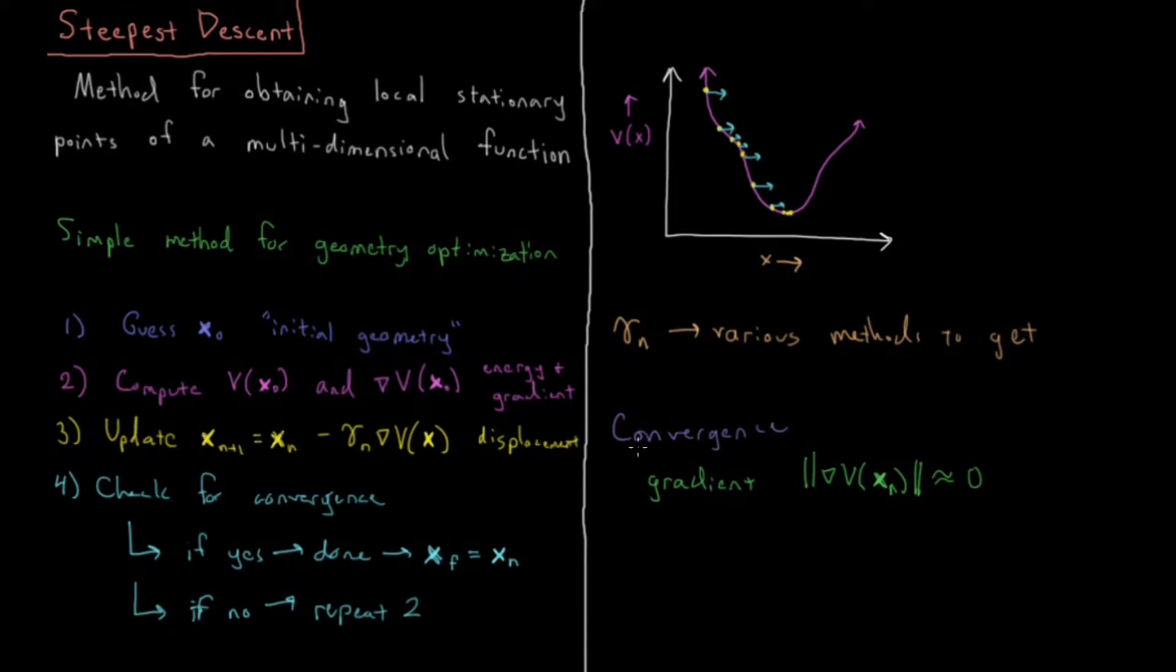We also need to converge with respect to the energy. So that's just that V of x_n minus V of x_{n-1}, that that is approximately going to zero. So the energy is approximately not changing between two consecutive iterations, a value there typically around 10 to the minus 6 hartrees in energy, if you're talking about a quantum mechanical optimization.